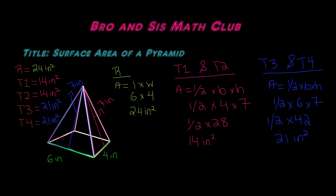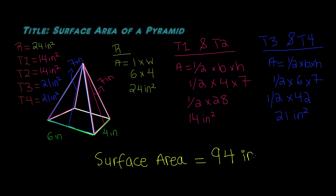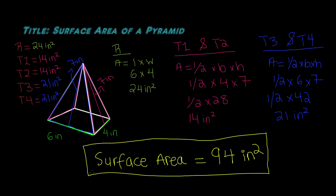Now that we have the areas for each of the two-dimensional figures in this three-dimensional pyramid, let's add them together to find the total surface area. We have 24 inches squared plus 14 inches squared plus 14 inches squared plus 21 inches squared plus 21 inches squared, which gives us 94 inches squared. The surface area of this pyramid is 94 inches squared. Thanks for watching — if you have any questions, please ask them in the comments below, and we'll see you in our next video!